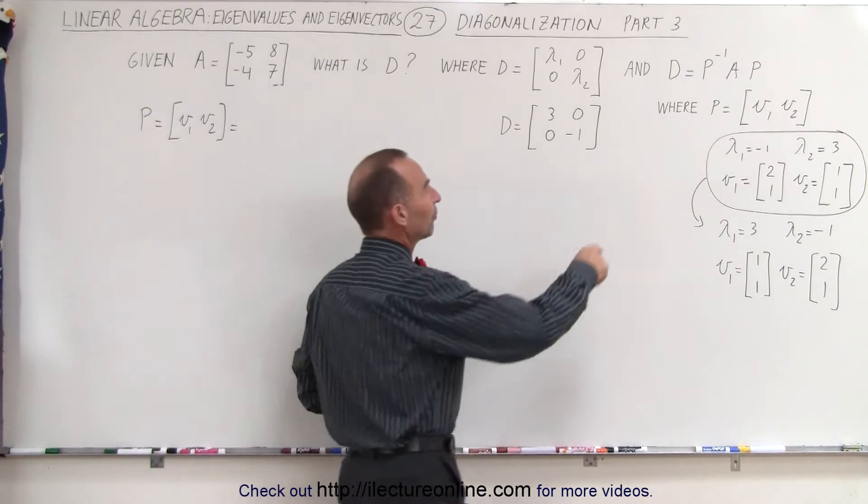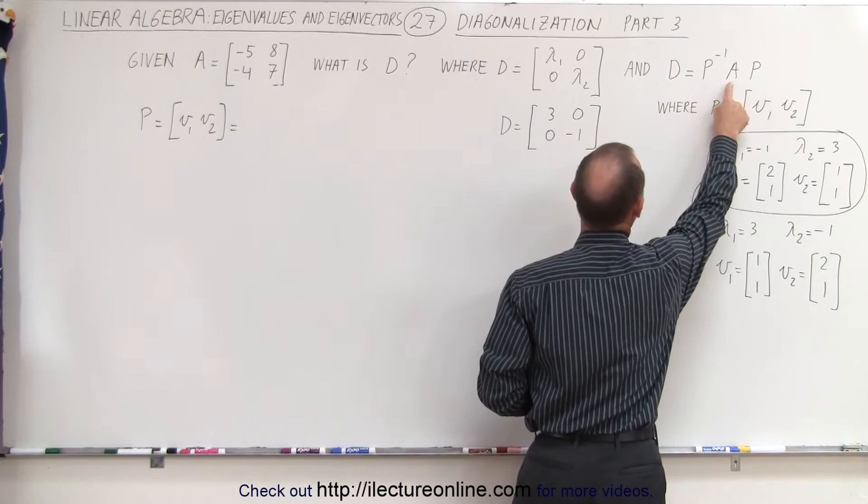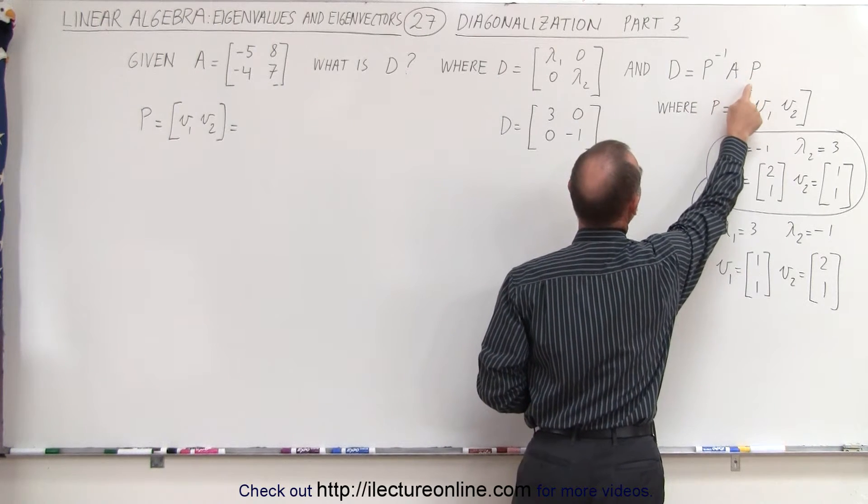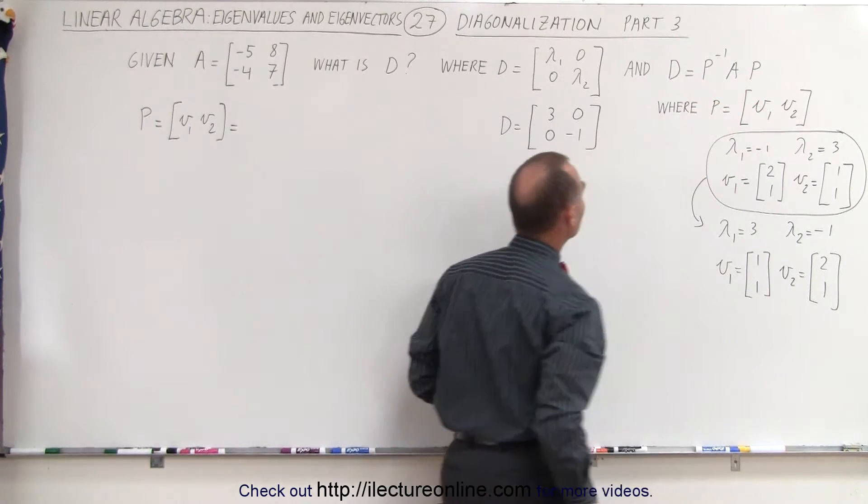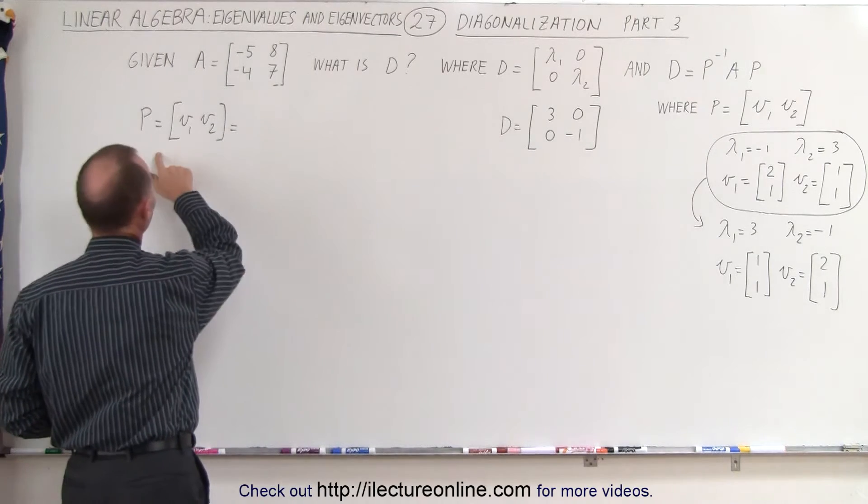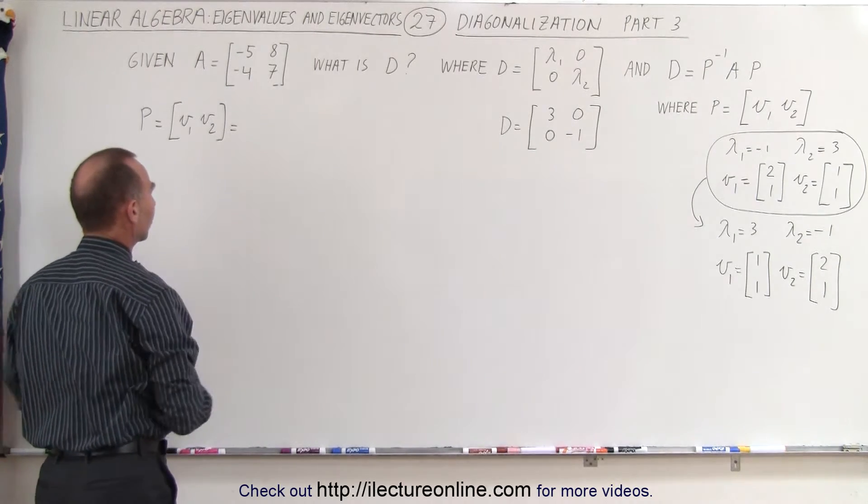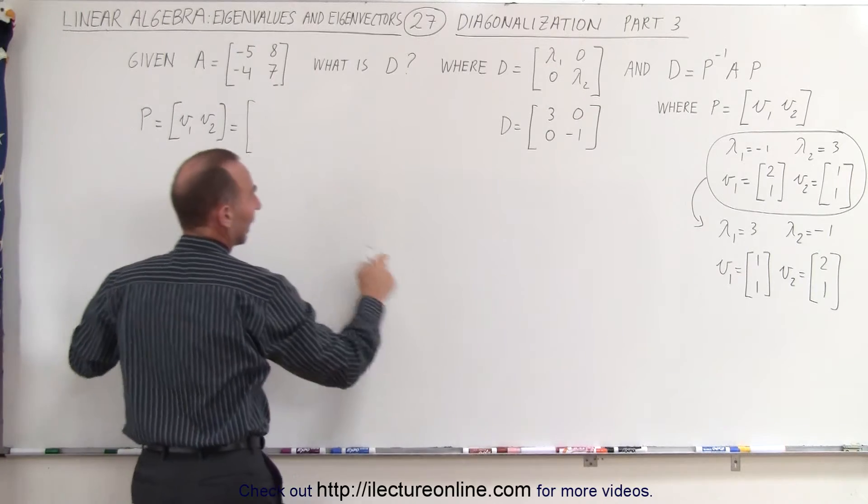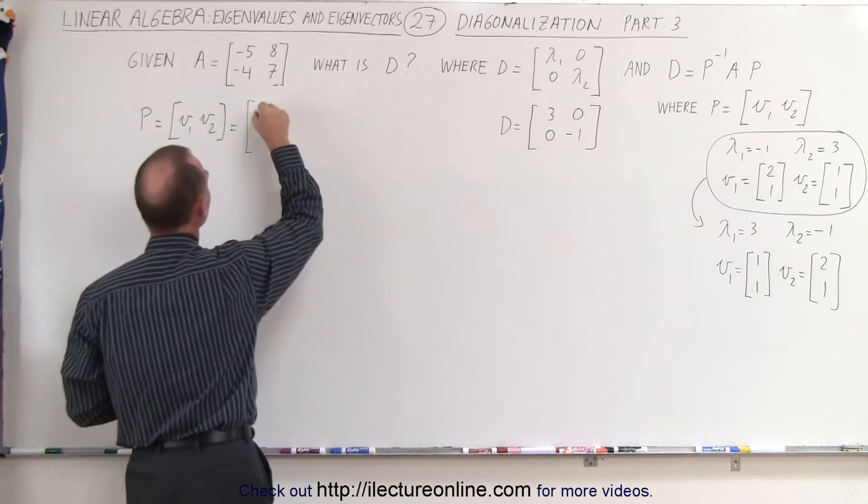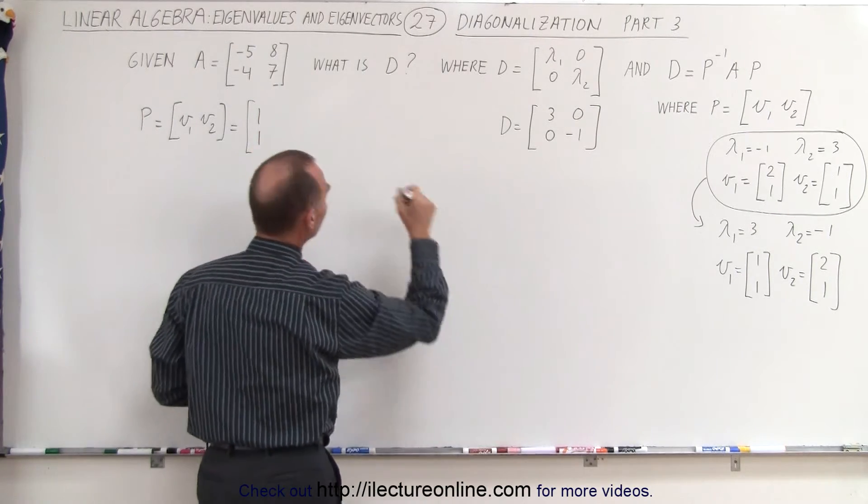Remember that we can also find the diagonalization by taking the matrix A and sandwiching it between the P and the P inverse matrix, where the P matrix is defined as the eigenvectors. So this is now going to be equal to, eigenvector 1 is 1, 1, and eigenvector 2 is 2, 1.